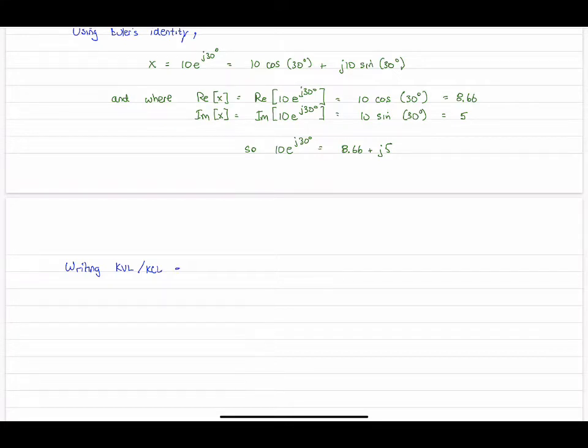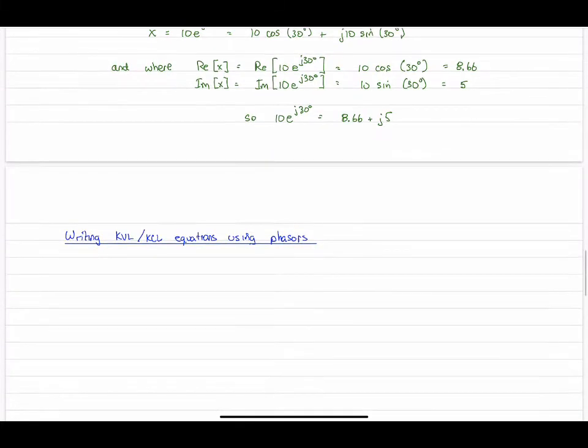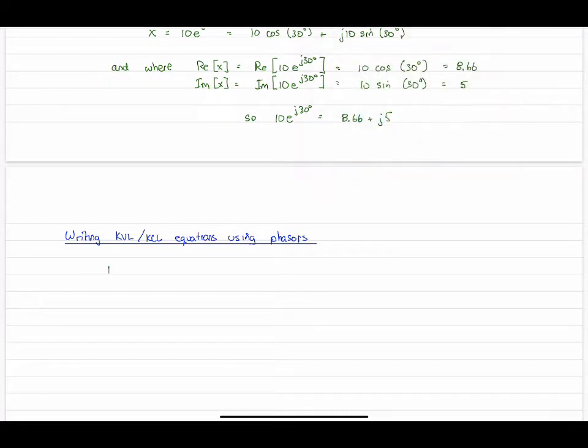Now writing KVL and KCL equations or any other equation like node voltage mesh current, it doesn't matter, now using phasers. In red here, this is the key step, this is how it all works.